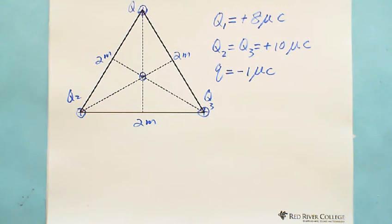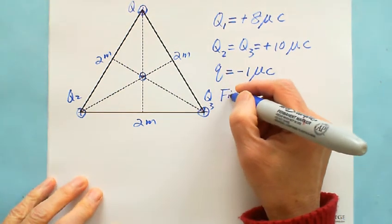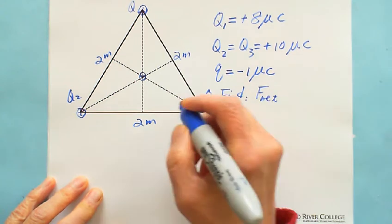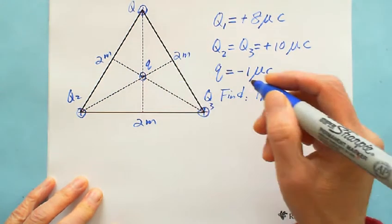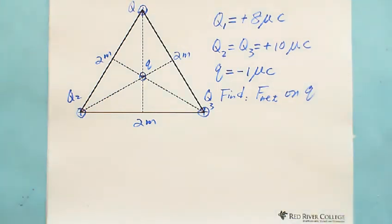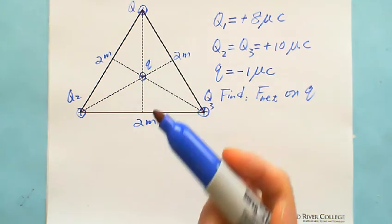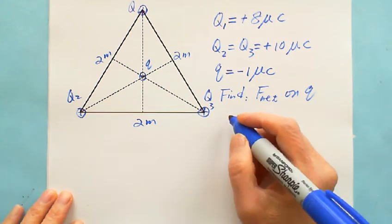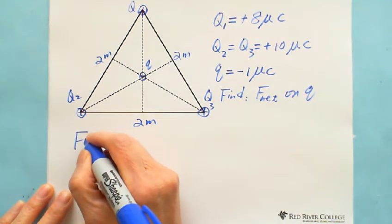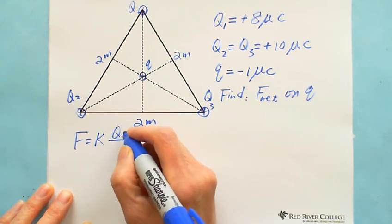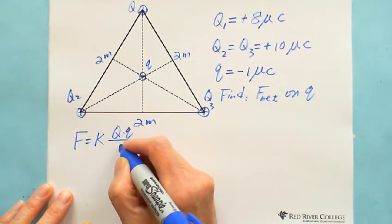Now we are looking for the net force on the small charge q. Because this is talking about point charges, we obviously use Coulomb's Law, which is F equals K times Q times small q divided by R squared.